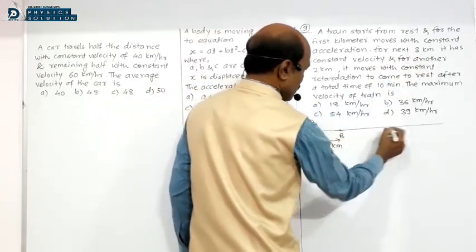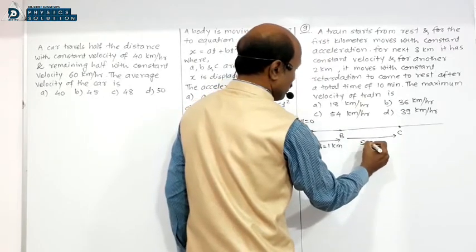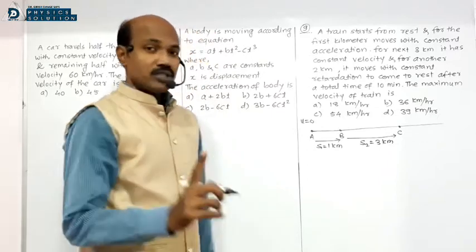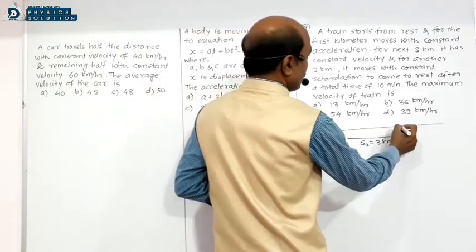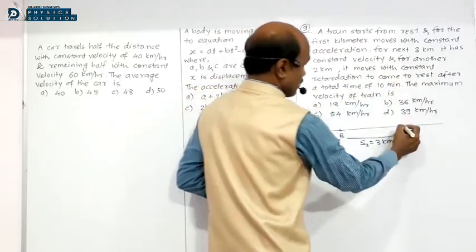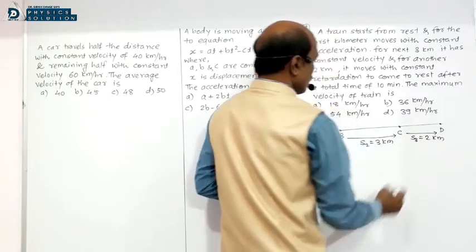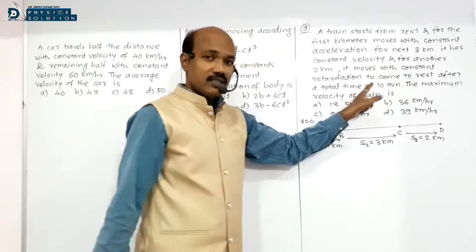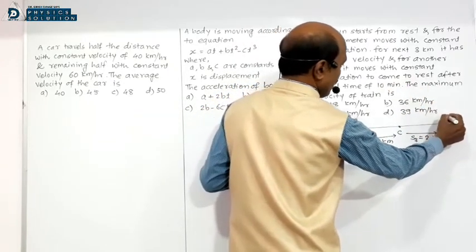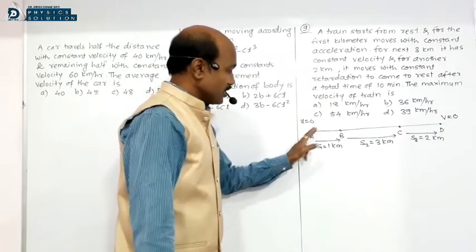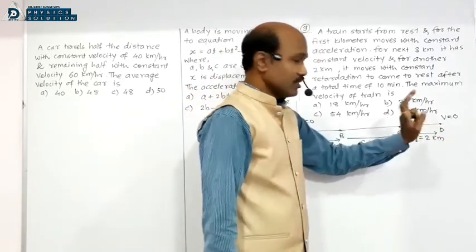For the next 3 kilometers, suppose B to C, there is constant velocity — acceleration is 0. And for another 2 kilometers, suppose S3 equal to 2 km, C to D, it moves with constant retardation — retardation means negative acceleration. At point D it comes to rest, so final velocity is 0.